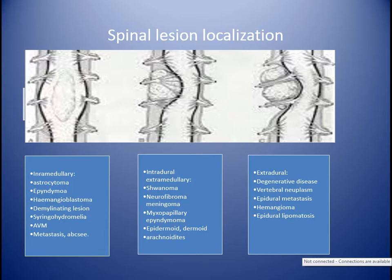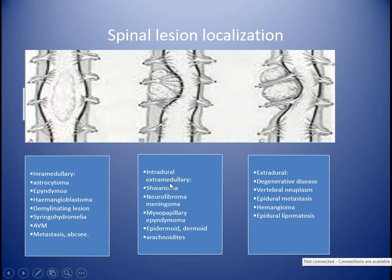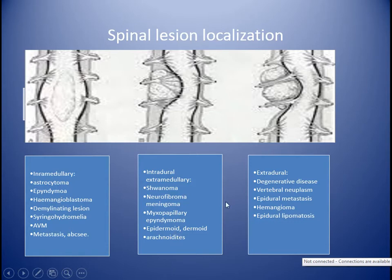Intradural extramedullary means within the dura, outside the cord. The lesion will form an acute angle with the CSF and compress the cord while widening the CSF space. Nerve sheath tumors — schwannoma, neurofibroma, and meningioma — make up 90% of intradural extramedullary lesions. The others include myxopapillary ependymoma, dermoid, epidermoid, and arachnoiditis. Dermoid and epidermoid lesions may also occur extradurally, but rarely.